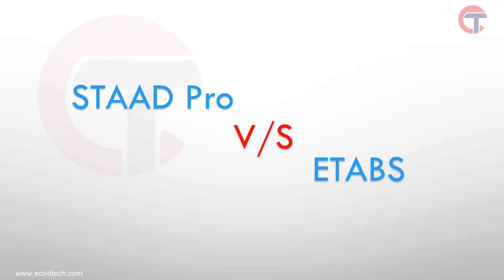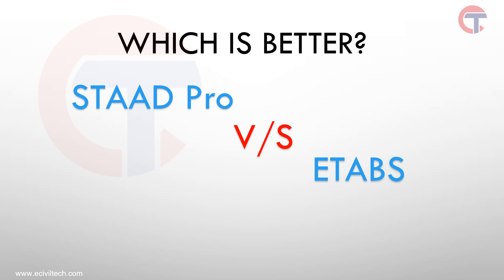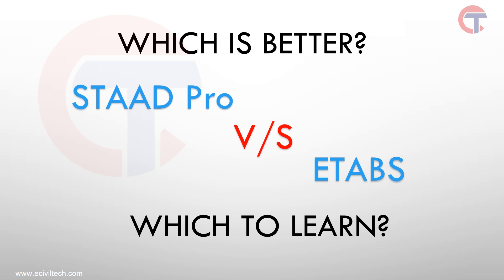All engineering students, especially final year students interested in structural design, always have a question: which software is better, STAAD.Pro or ETABS? This question leads to another question: which software should we learn? This arises because these two softwares are the most popular, used in many design firms, and after learning them there is a high probability of getting a good job in the design field.